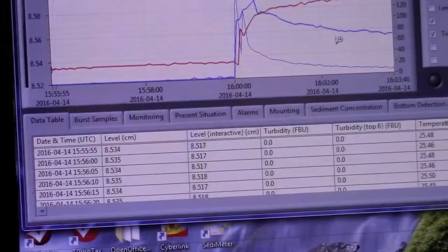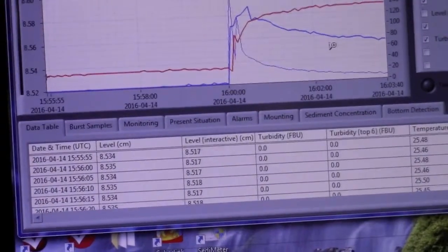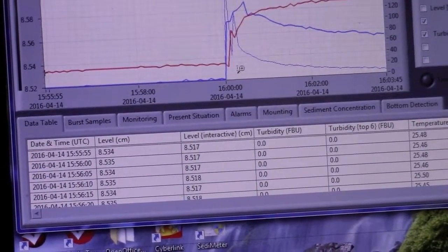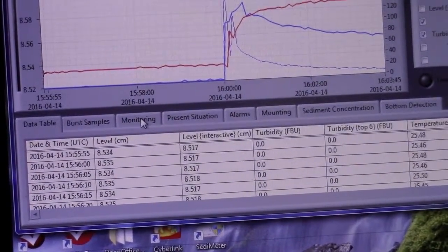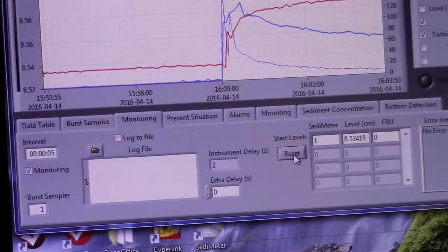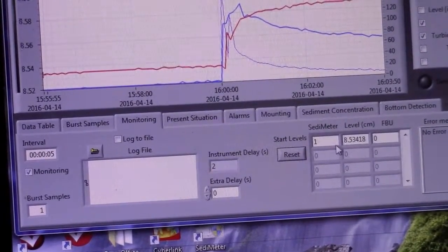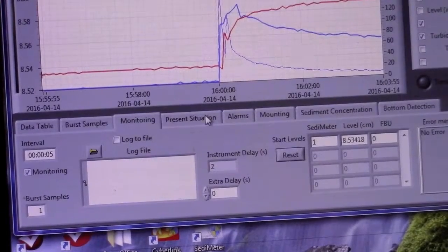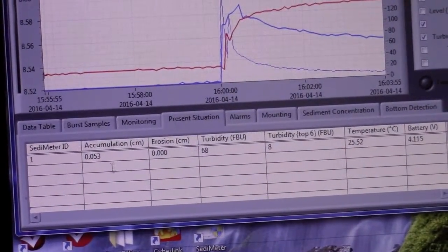We don't have to go to the graph to measure it. We can look in the table at the bottom. Here is a tab called monitoring. If we go to monitoring and click reset it will take the start values as the origin, and then we go to present situation and it will show us the difference directly.